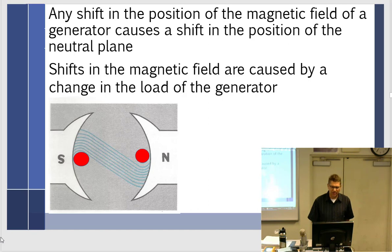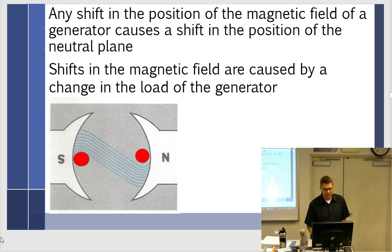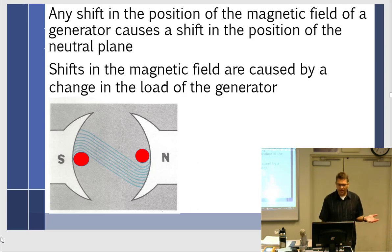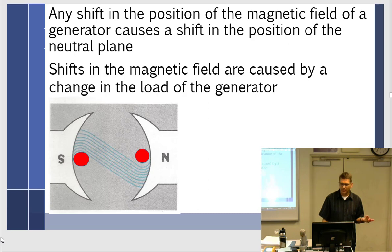Shifts in the magnetic field are caused by a change in the load of the generator. As the generator load increases, what happens to the current running through the armature? The armature — the spinny part — is the thing creating the electricity, going to a commutator, and then going out. As I increase the demand on the generator — turning on landing lights, radio, coffee pot — the generator has to work harder and put out more current.